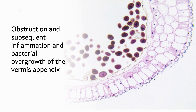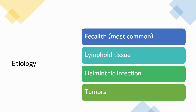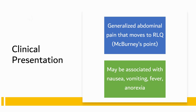In at least some cases, obstruction causes bacteria to grow and the lumen to become dilated, which can make it difficult for lymph and blood to flow freely. Inflammation of the appendix is linked to fecaliths, partially digested food leftovers, lymphoid hyperplasia, intraluminal scarring, tumors, bacteria, viruses, and inflammatory bowel disease.